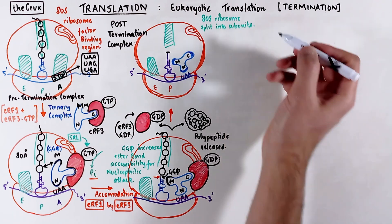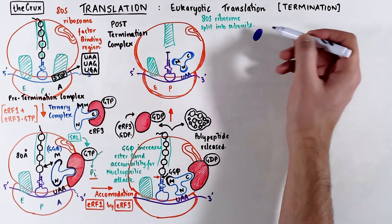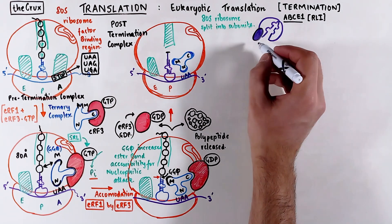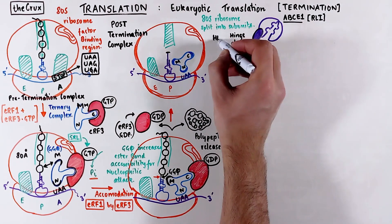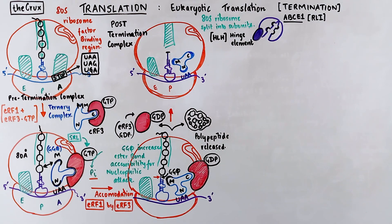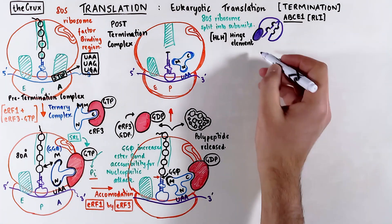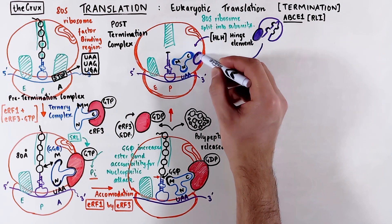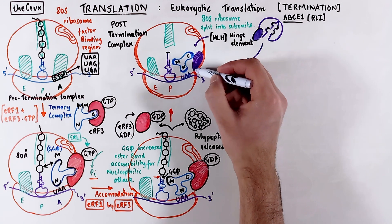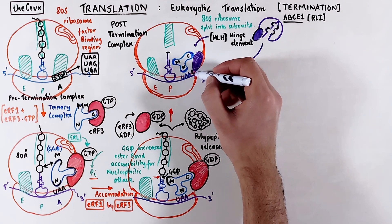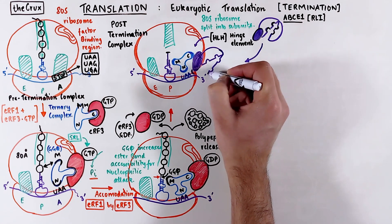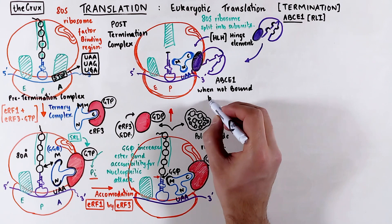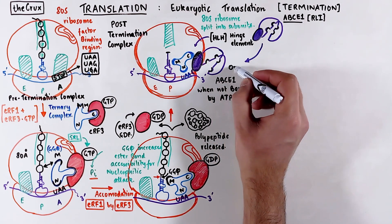Now we enter the process of ribosome recycling. To start the recycling process, the complex ABCE1, also known as RLI, enters. This complex has a hinge element, which is essentially a helix-loop-helix structure. ABCE1 also has two pockets which have the potential to close, but they're open for now. This ABCE1 complex is recruited onto the post-termination complex — specifically, the hinge element interacts with release factor 1 at domain C and binds at the junction of the 40S and 60S subunits. These pockets close when ATP is bound, but when ATP is not bound they are open, so we call this the open configuration of ABCE1.